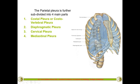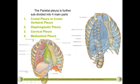To summarize: the costal pleura is in contact with the chest wall, the diaphragmatic pleura is at the base, the mediastinal pleura is in contact with the heart and mediastinal structures, and the cervical pleura covers the apex. In this picture you can see the apex of the lung covered by the cervical pleura, the costal surface covered by costal pleura, the part touching the dome of the diaphragm is the diaphragmatic pleura, and the part in contact with the heart is the mediastinal pleura.